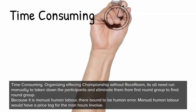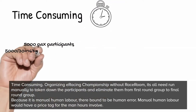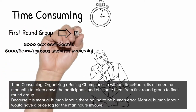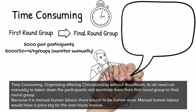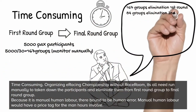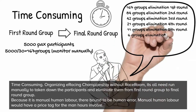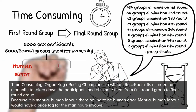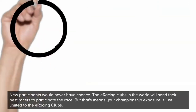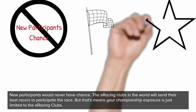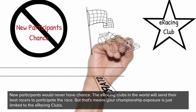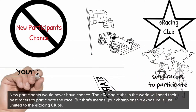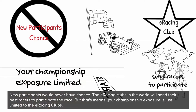Organizing an e-racing championship without Race Room means everything needs to be run manually — taking down participants and eliminating them from the first round group through to the final round. Because it is manual human labor, there are bound to be human errors. Manual labor also carries a price tag for the man-hours involved. New participants would never have a chance, as e-racing clubs worldwide will send their best racers, limiting the championship's exposure to those clubs only.